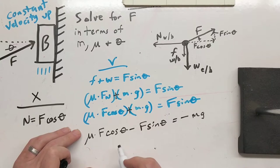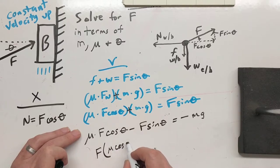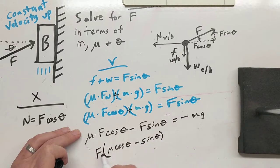Now I need to bring out my F's, so it's F times mu cosine theta minus sine theta. Just distribute that out. We get that equals negative mg.